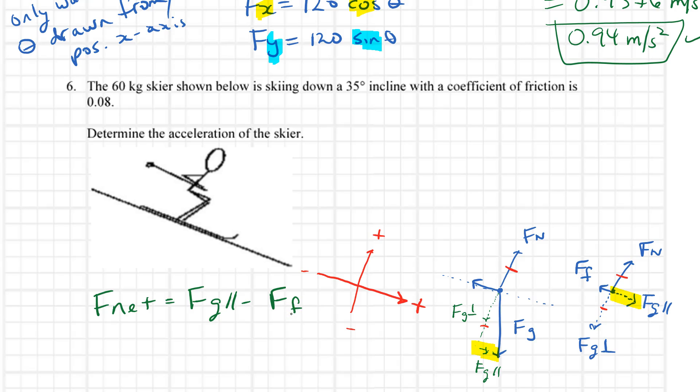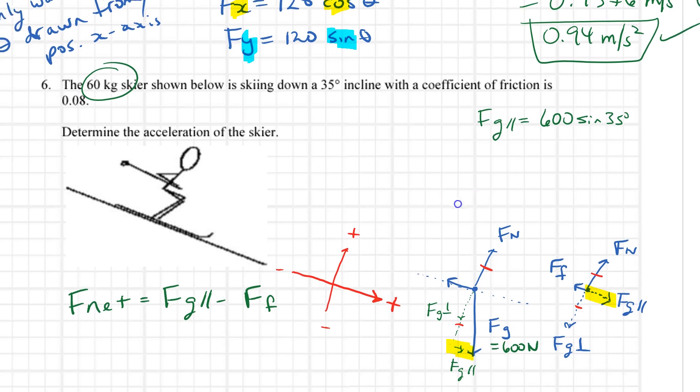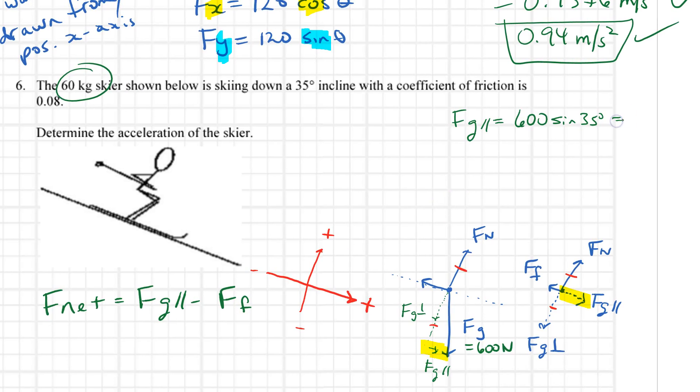Time to figure out some numbers. My mass is 60 kilograms, so my force of gravity is going to be 600 newtons. I'll work over here. My Fg parallel is going to be 600 multiplied by the sine of 35 degrees. Using my calculator, that's 344.15.